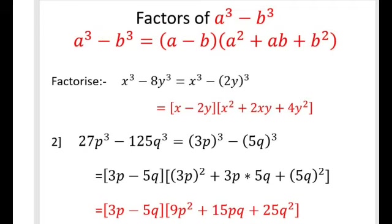So this becomes x³ - (2y)³. Now the factors of a³ - b³ is (a - b). Assume a as x and b as 2y. So (x - 2y). Now the second bracket: a² is x², plus ab — a is x and b is 2y — so x × 2y = 2xy, plus b²: (2y)² = 4y². So the factors of x³ - 8y³ = (x - 2y)(x² + 2xy + 4y²).